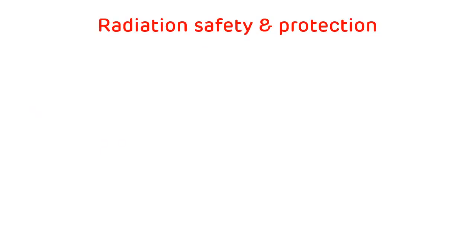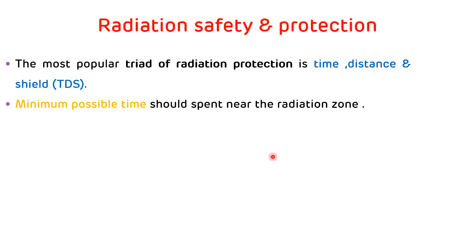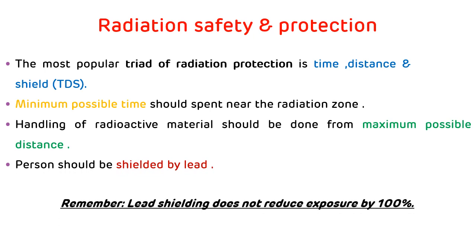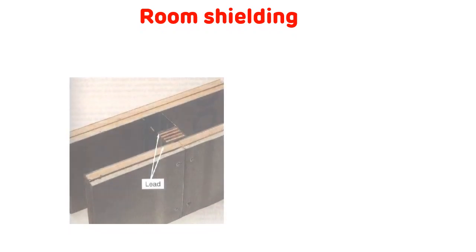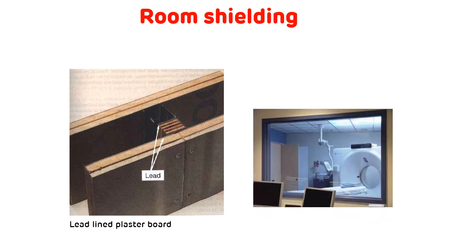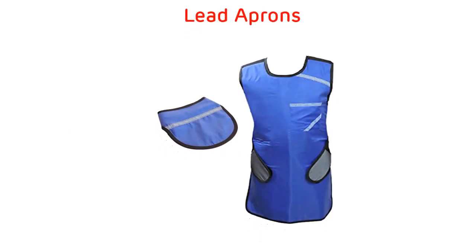Radiation safety and protection: the most popular triad of radiation protection is time, distance and shield — also known as TDS. Minimum possible time should be spent near the radiation zone. Handling of radioactive materials should be done from the maximum possible distance. Persons should be shielded by lead, though lead shielding does not reduce exposure by 100%. Shielding includes lead-lined plasterboard, lead glass viewing windows, and lead aprons.